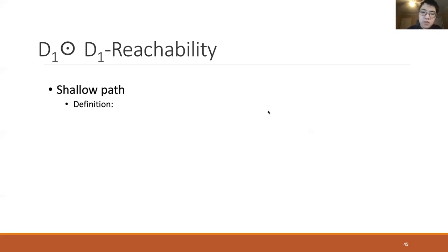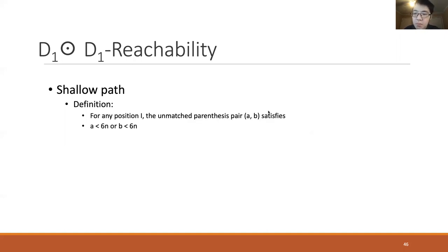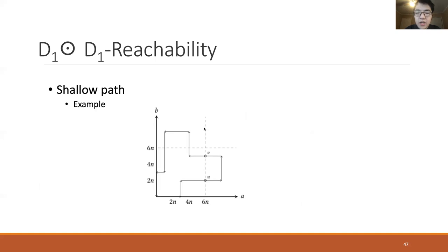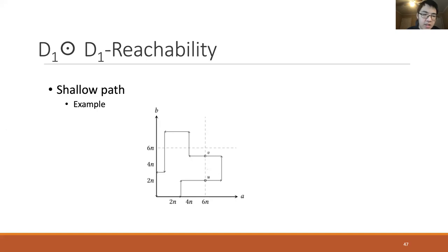We can now define a shallow path. We use n to represent a known number in the graph. A path is shallow if, at any position, at least one entry in the unmatched parentheses pair is smaller than 6n. In the figure illustrating the unmatched parentheses pair of a shallow D1D1 path, at any position, at least one entry of (A, B) is smaller than 6n. As we can see, in the shallow path, the distance between nodes U and V is bounded by 6n.